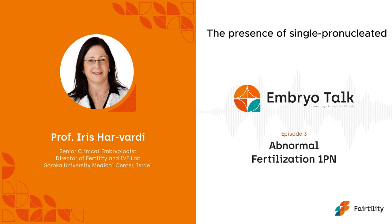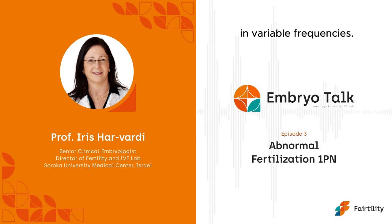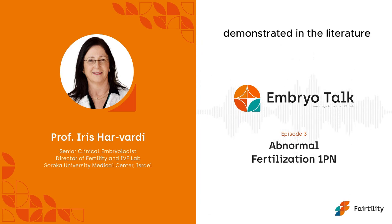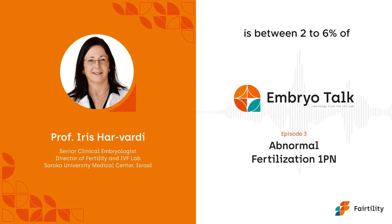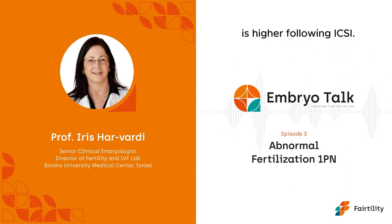The presence of a single pronucleated oocyte has been reported in variable frequencies. The range of incidence of a single pronucleus demonstrated in the literature is between 2–6% of inseminated oocytes. However, the incidence is higher following ICSI.